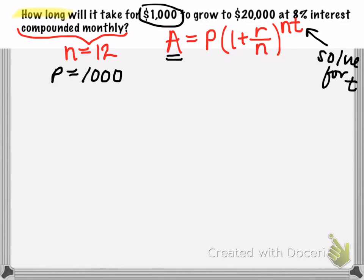So initially then, our setup would be $20,000 is equal to our initial amount of 1,000 times the quantity 1 plus...